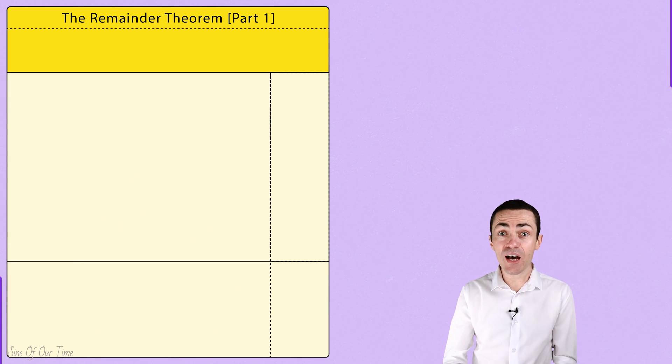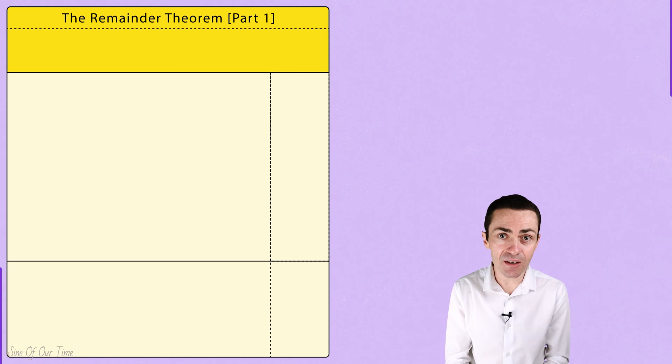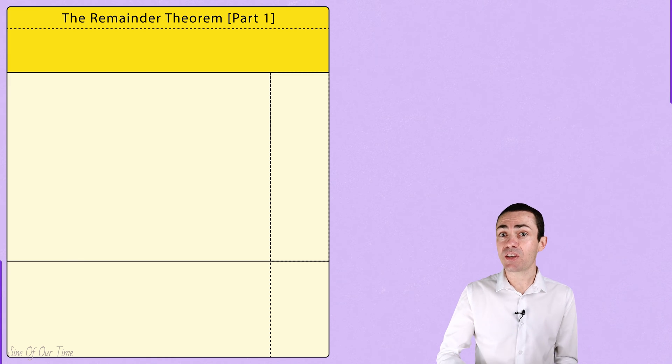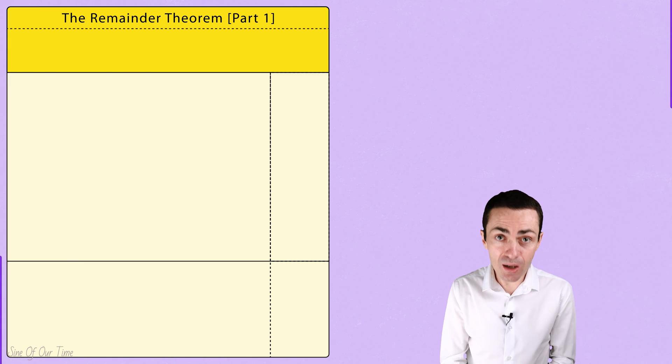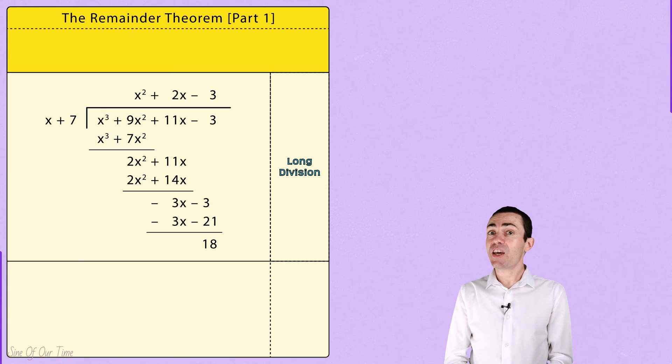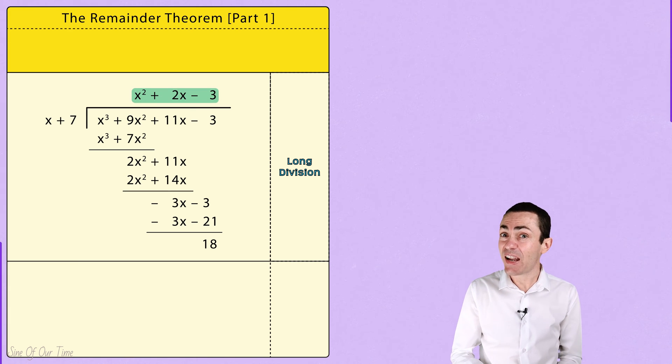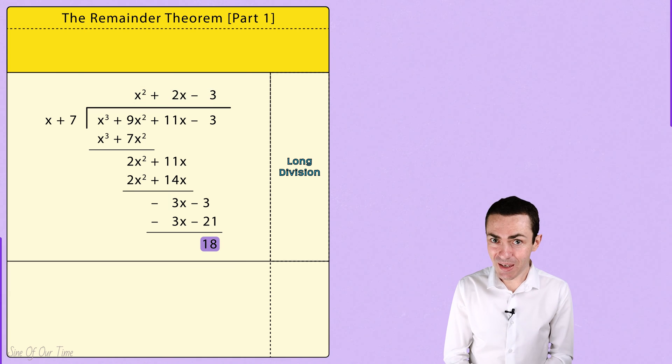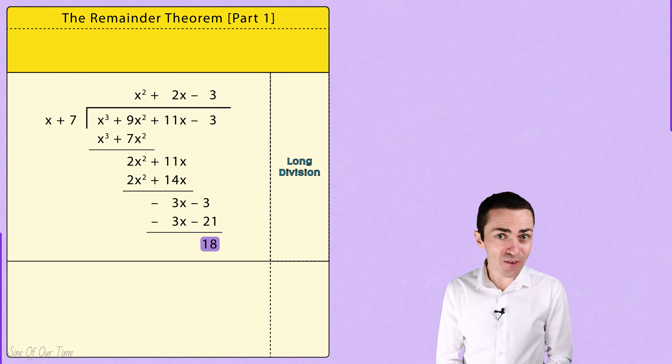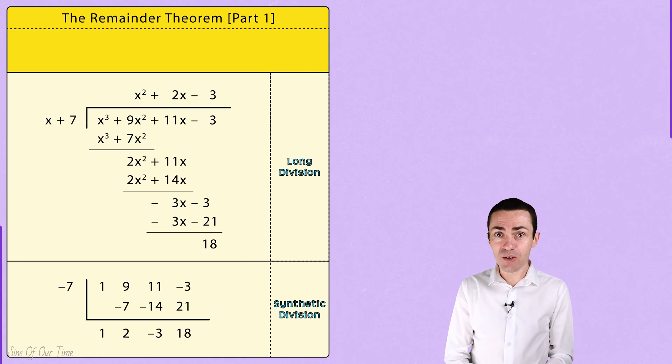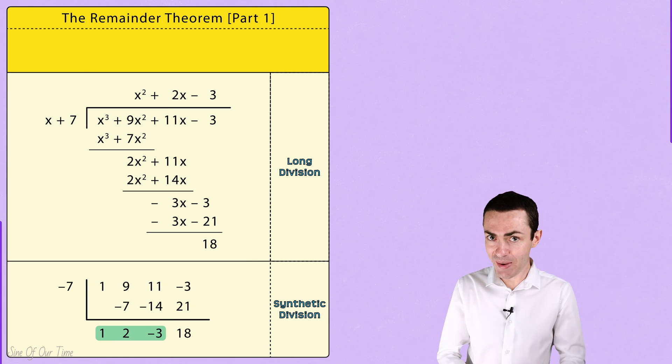So far we have covered two methods that can be used in order to find the remainder of a polynomial division. There is the traditional polynomial long division method which takes a long time to get to that quotient and ultimately the remainder. And then there is synthetic division which is a quicker and easier method to get the quotient and the remainder.